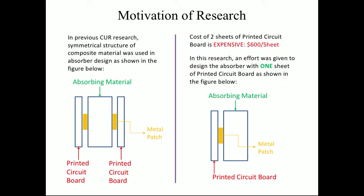Motivation of Research: In previous CUR research, symmetric structure of a composite material was used in absorber design as shown in the figure below. We are using two printed circuit boards in this case. But because the cost of printed circuit boards or PCB is expensive, $600 per sheet, in this research an effort was given to design an absorber with one sheet of printed circuit board, as shown in the figure below.